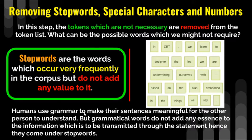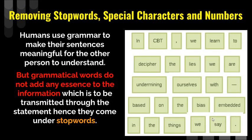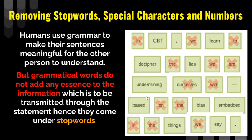Humans use grammar and use these stop words to make their sentences meaningful and for the other person to understand. But grammatically, these words do not add any essence to the information which is to be transmitted through the sentence. Hence they come under stop words. Without prepositions, conjunctions, pronouns, and articles, we cannot give the correct structure to our sentences that anybody can understand - that is why they are necessary for us humans. But these grammatical words do not add any essence to the core information, hence they come under stop words and we need to remove all of them.